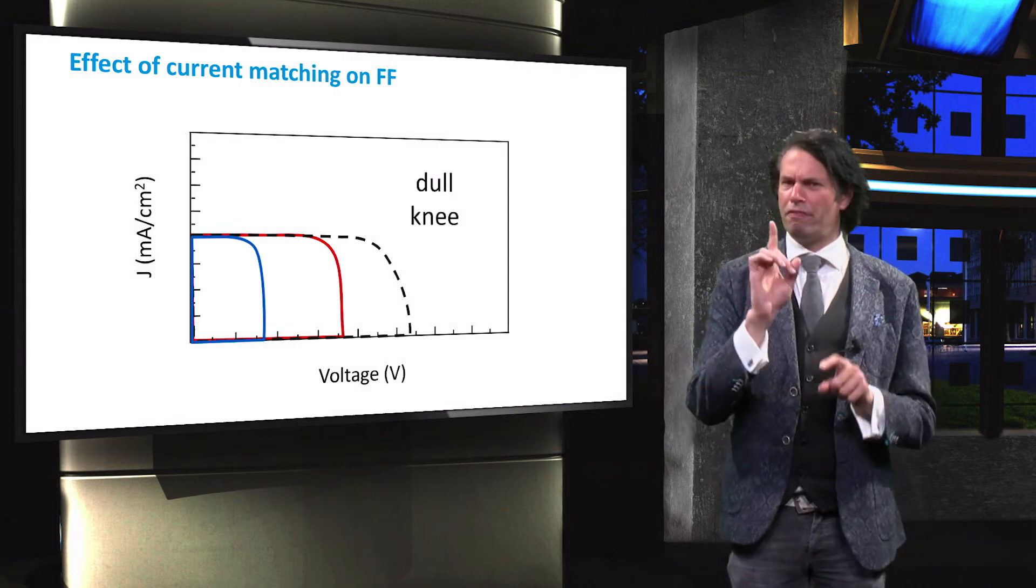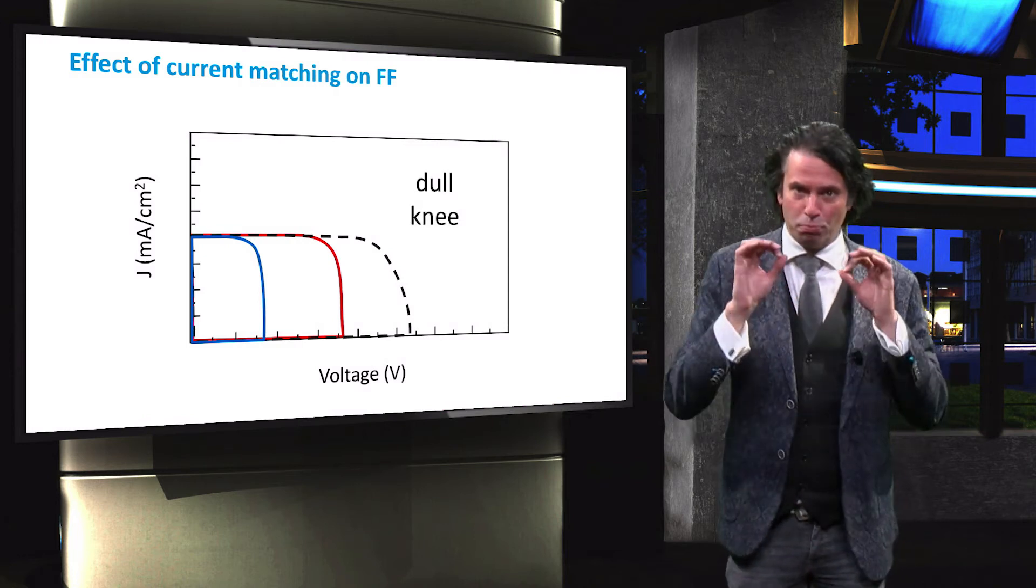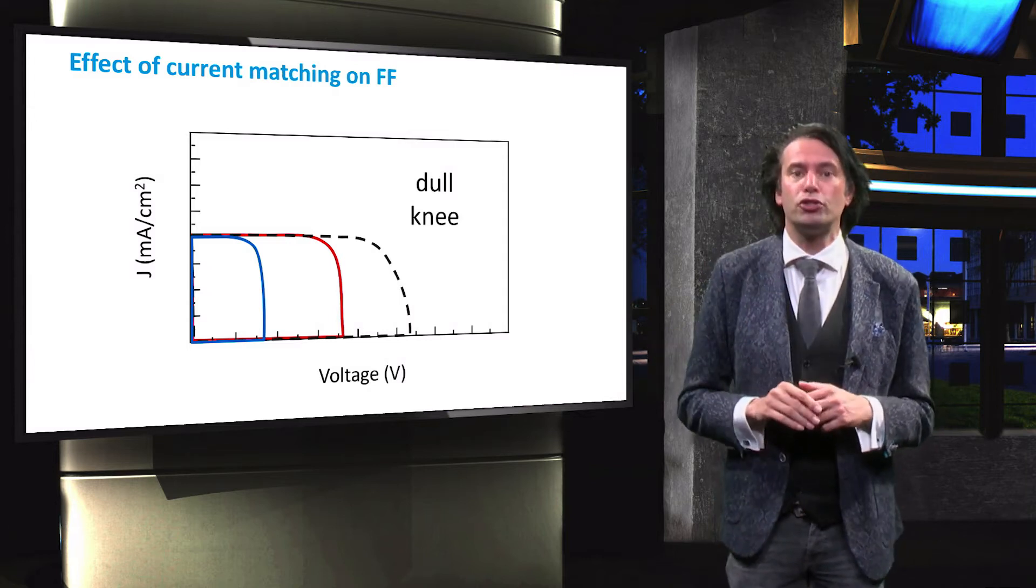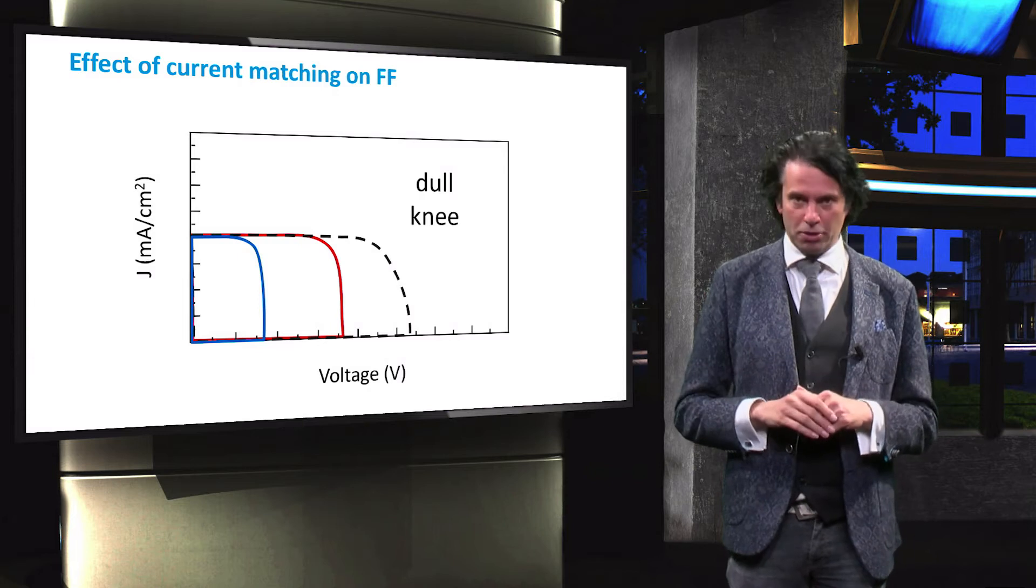As a result, the fill factor of a current matched multi-junction will be lower than the fill factor of a multi-junction with a current limited sub-cell.